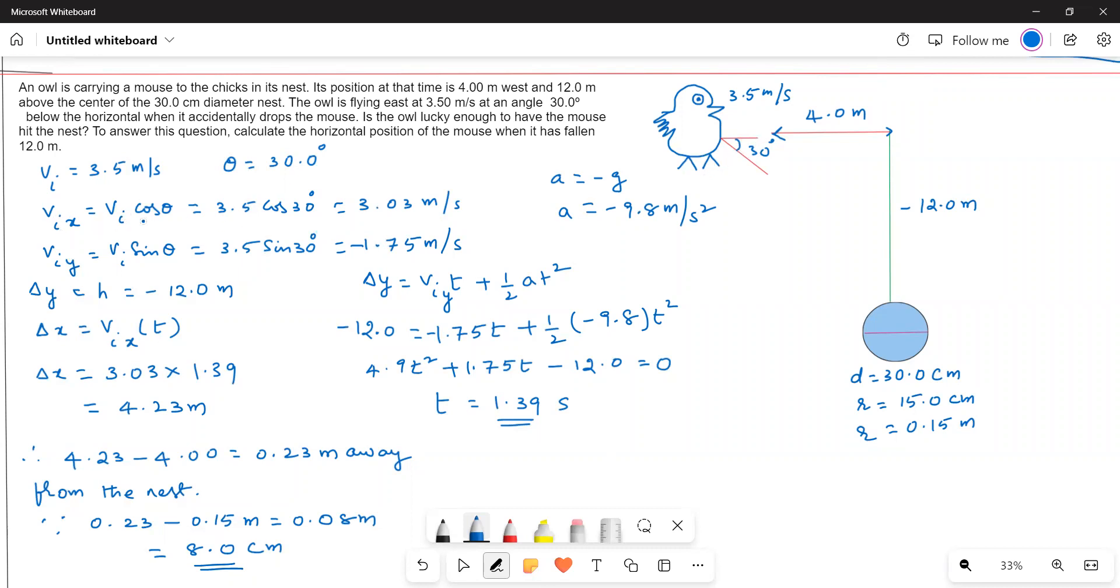So vix = vi cos θ and viy = vi sin θ. When we plug in the values we get 3.03 meters per second as the initial velocity along the x direction, and 1.75 meters per second in the y direction.